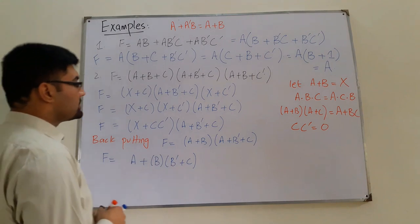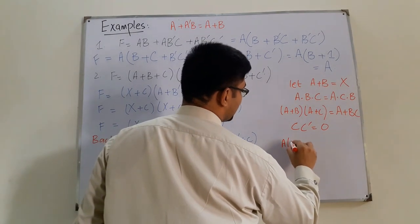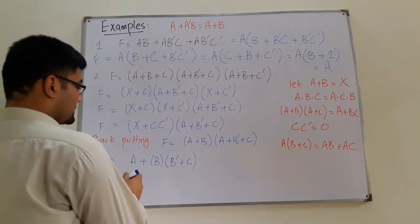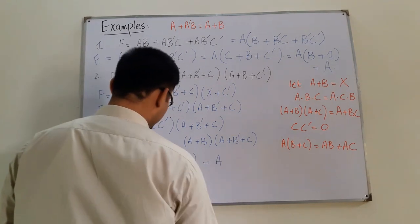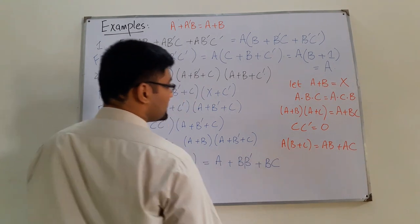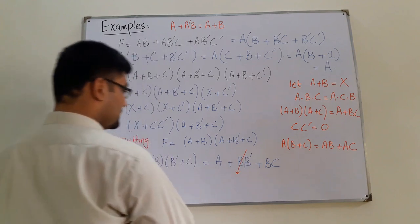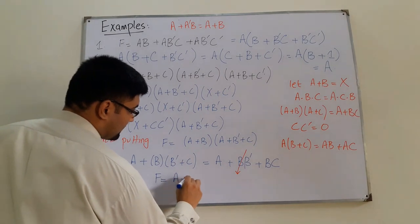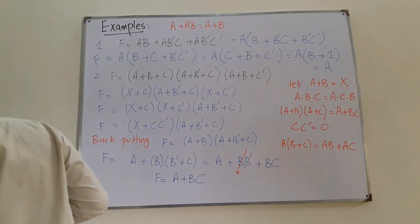Now applying the distributive law A(B+C) = AB+AC: we expand B(B'+C) = BB' + BC. Since BB' = 0, this drops out, and the function reduces to A + BC.